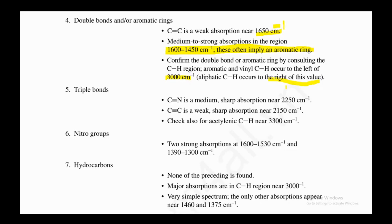For triple bonds: C≡N is a medium sharp absorption near 2200 to 2260 cm⁻¹; C≡C is a weak sharp absorption in the same region — also check for acetylenic CH near 3300 cm⁻¹. Nitro groups show two strong absorptions at 1600 to 1530 cm⁻¹ and 1390 to 1300 cm⁻¹. If none of these features are found, the compound is likely a hydrocarbon, with major absorptions only in the CH region near 1460 and 1375 cm⁻¹.